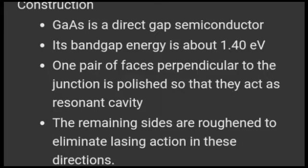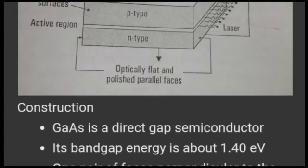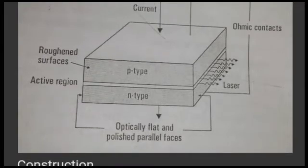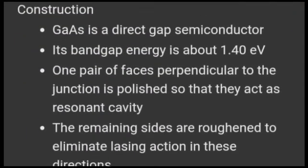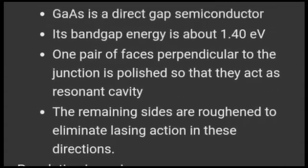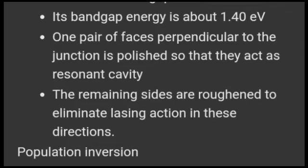One pair of faces perpendicular to the junction is polished so that they act as a resonant cavity. The laser light is emitted and reflected on the polished side. The other two sides — the P-type and N-type faces — are left rough to eliminate lasing action in those directions.